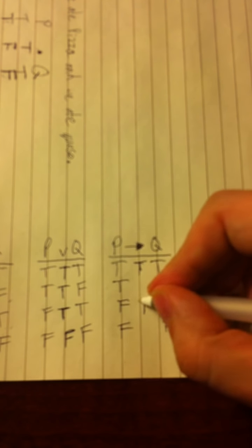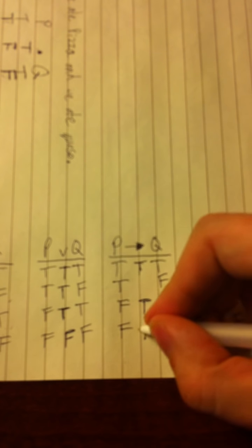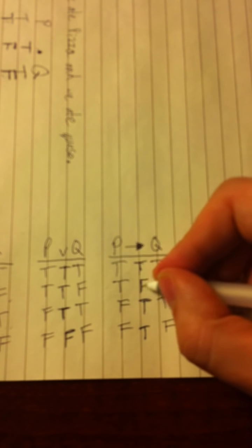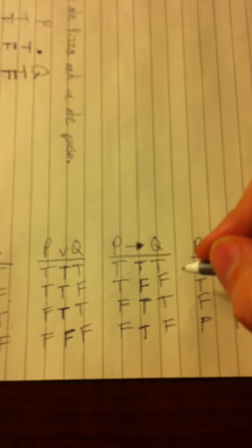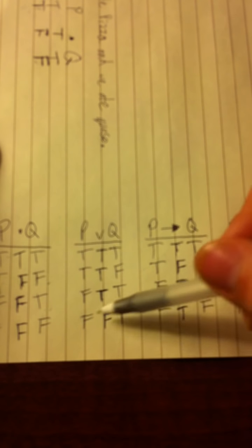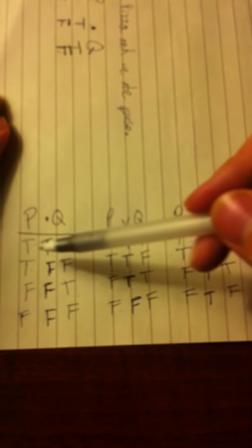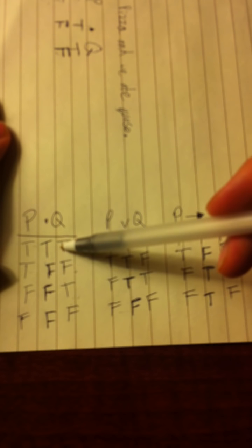Arrow: there's only one way to make an arrow false, and that's what I call 'tiff' — true, false, false. Similarly, there's only one way to make a wedge false: false, false, false. And there's only one way to make a dot true: true, true, true. So there's not a lot to memorize if you remember those three phrases: only one way to make a dot true — true, true, true; only one way to make a wedge false — false, false, false; only one way to make an arrow false — tiff.